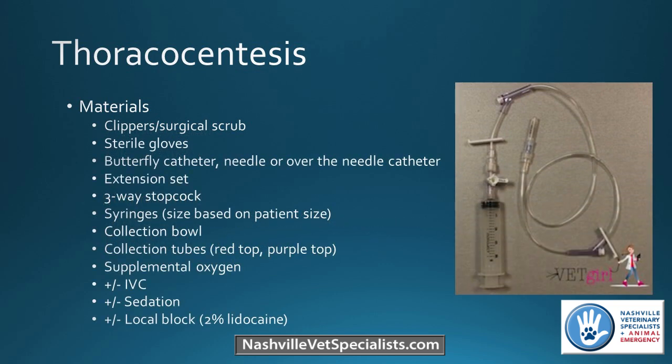The materials needed for this procedure are listed here, along with a picture of one of our setups. You need sterile supplies, and the type of catheter depends on doctor preference and patient size. You'll want an extension set, a three-way stopcock, and syringes — sizes vary based on the patient. Also a collection bowl and tubes. An IV catheter works nicely. Sometimes you need sedation; you can also do a local block. Supplemental oxygen is recommended as these patients are usually clinical for their disease.